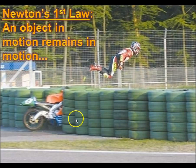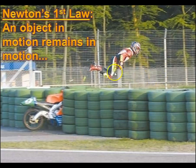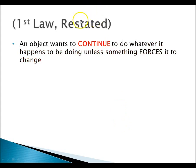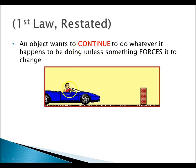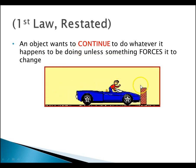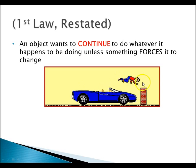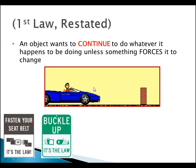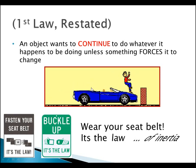An object in motion remaining in motion. If he was going 60 miles an hour when that motorcycle crashed, he's continuing to go 60 miles an hour. This is why you always wear helmets and don't motorcycle race. An object wants to continue doing whatever it's doing unless something forces it to change. In this case, the car was going at the same rate all the way through — this is why you fasten your seatbelt and buckle up. It's the law of inertia.